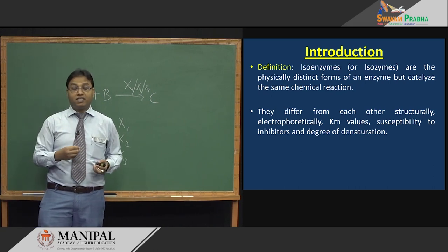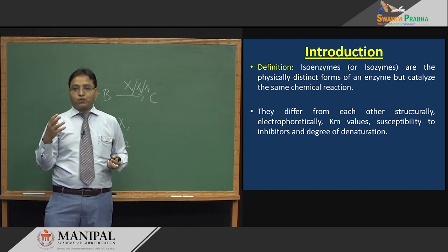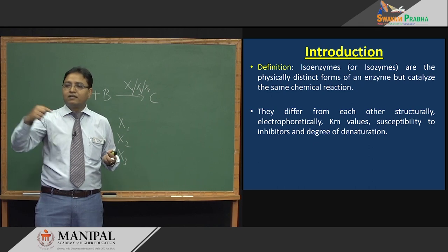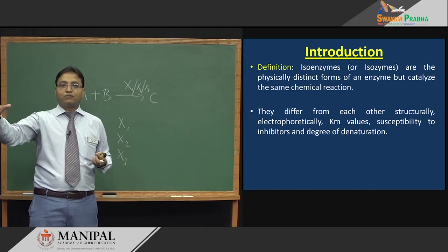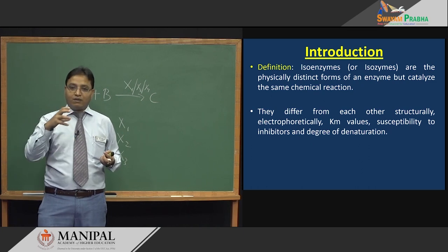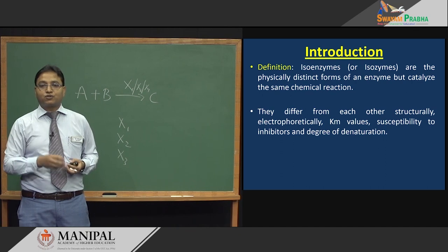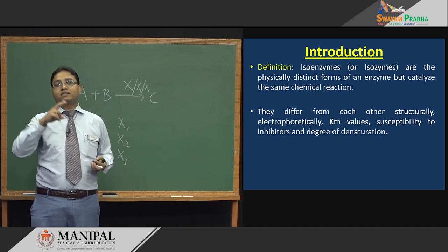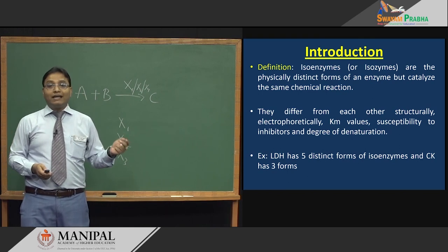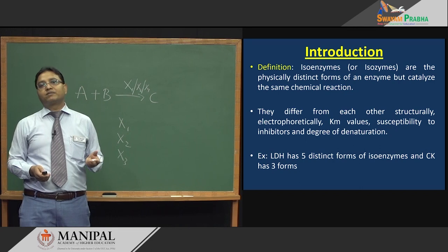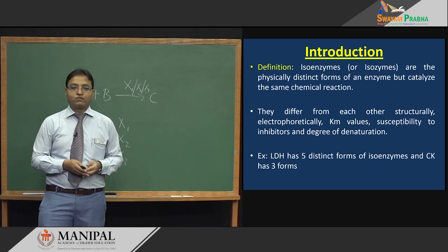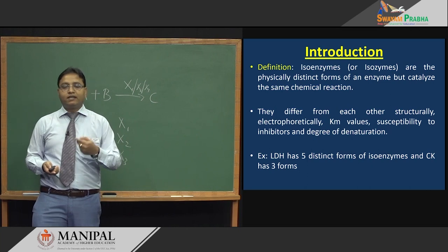Regarding the degree of denaturation — isoenzymes are proteins, and when heat is applied proteins normally denature. But since isoenzymes are different physical forms of the enzyme, some may be stable at a given temperature while others are not. One isoenzyme may be stable at a particular temperature whereas another isoenzyme may denature at the same temperature. For example, LDH (lactate dehydrogenase) has 5 distinct isoenzyme forms, and CK (creatine kinase) has 3 distinct isoenzyme forms.